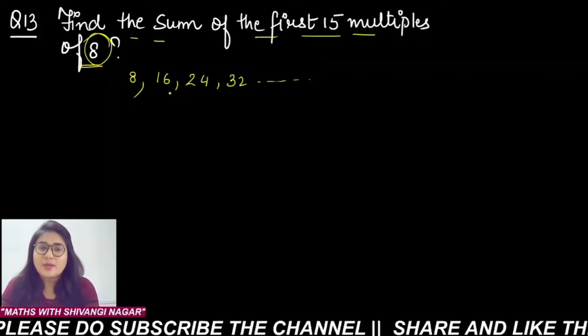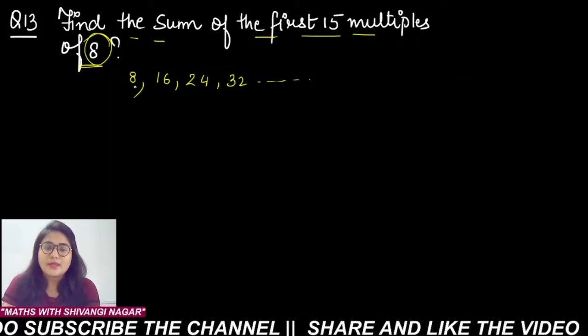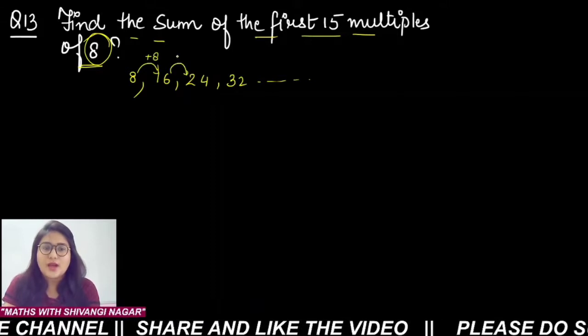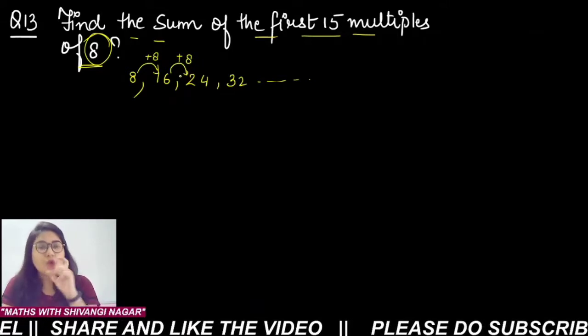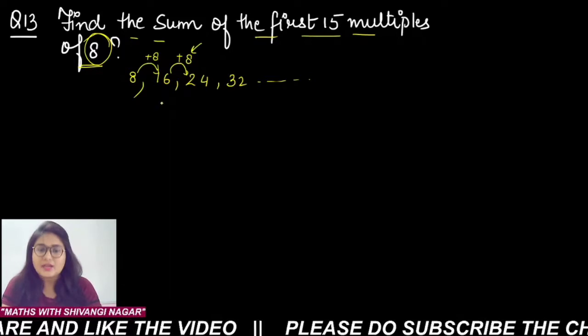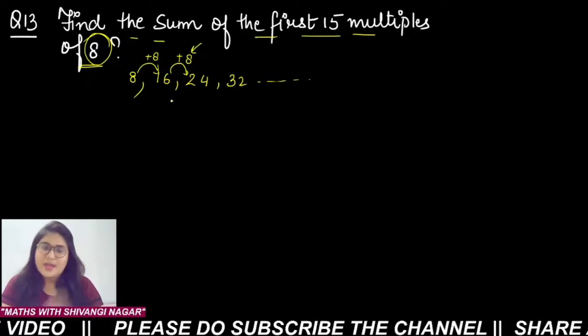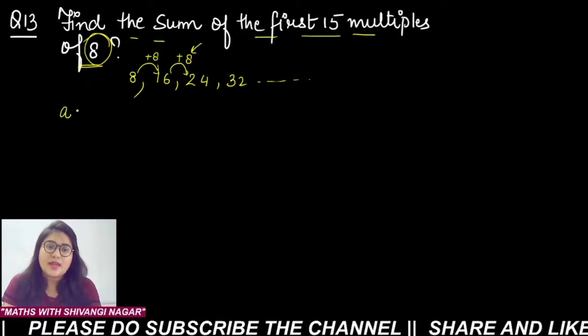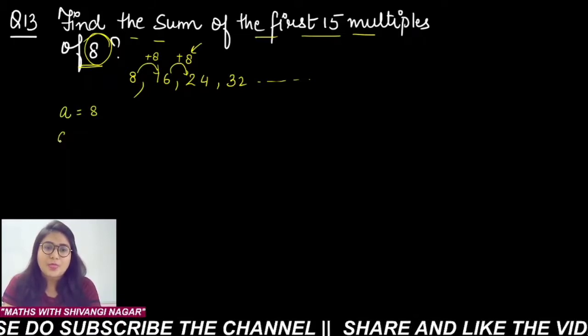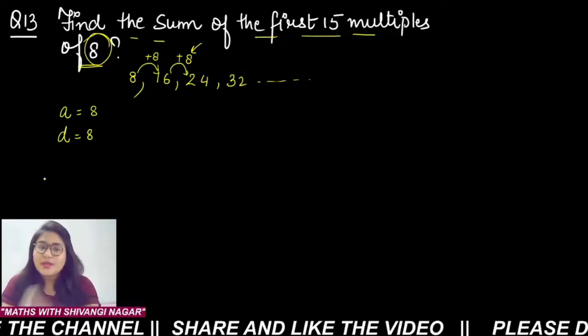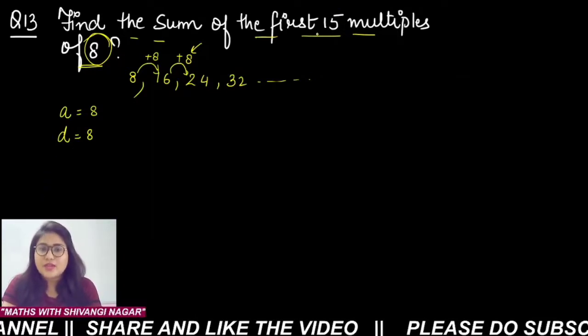Yes, it is forming an AP because if you see here, every succeeding number is generated by adding a constant number, this 8, to the preceding number. So this is an AP where your first term is 8, common difference is also 8. What we need to calculate here is the first 15 terms.